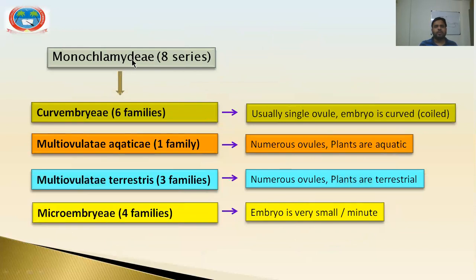The subclass Monochlamydae has absent corolla; instead, perianth members are present. It is divided into eight series. The first series, Curvembryeae, includes plants with a single ovule whose embryo is coiled or curved; this series consists of six families. The second series, Multiovulatae Aquaticae, includes plants with numerous ovules that are aquatic in habitat, growing in water; this series consists of only a single family.